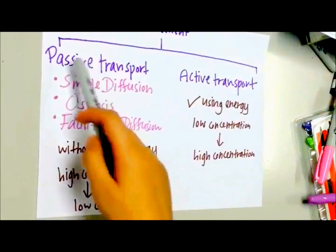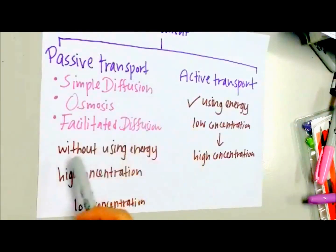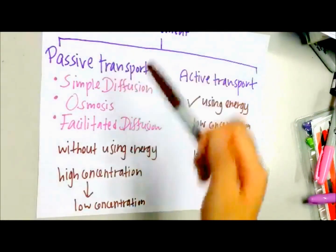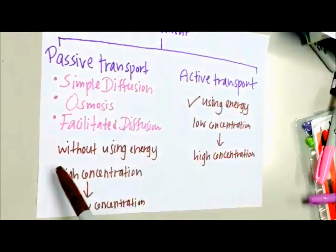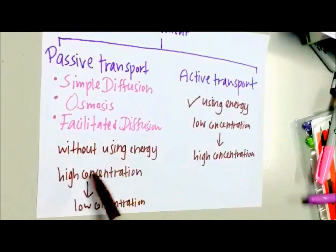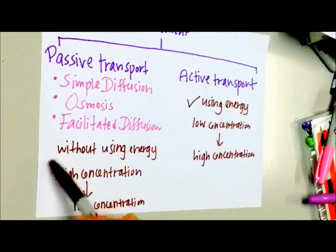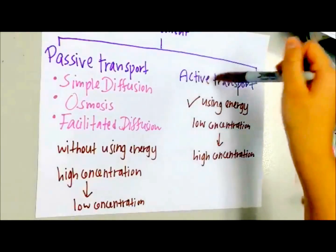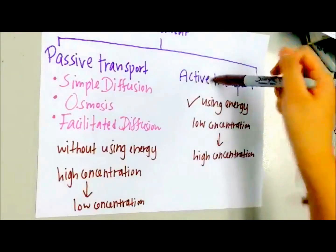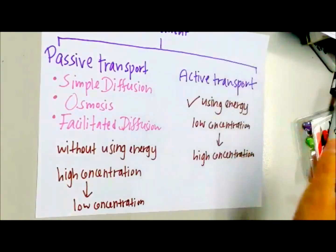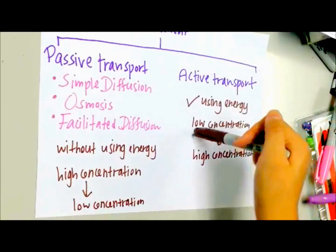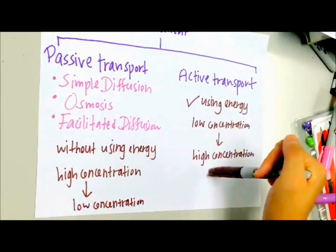Passive transport does not use energy because it is the movement of molecules from a region of high concentration to a region of low concentration. While active transport is the movement of molecules from a region of low concentration to a region of high concentration.